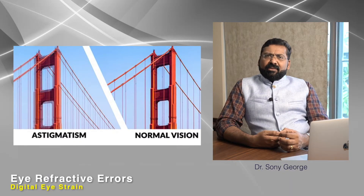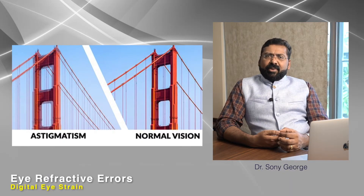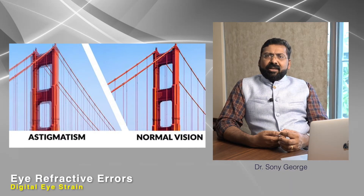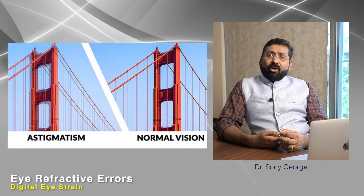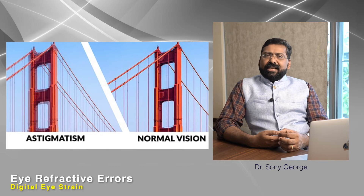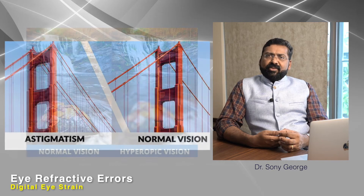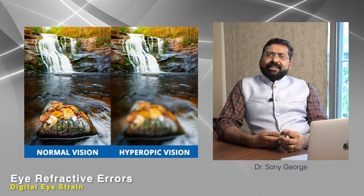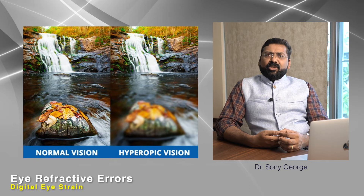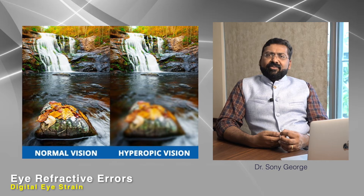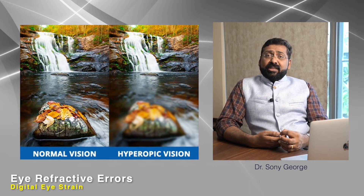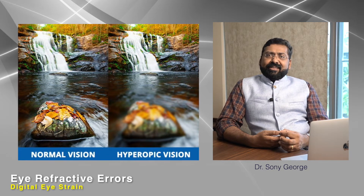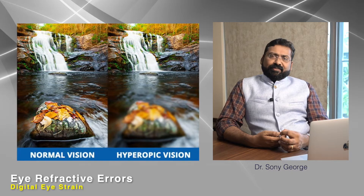Children with astigmatism and hyperopia will have more headache and eye strain rather than visual problems, whereas a child with short sight will definitely have decreased vision over eye strain.